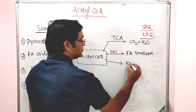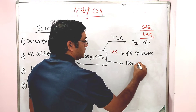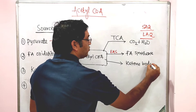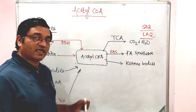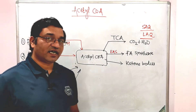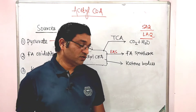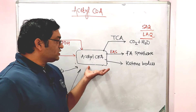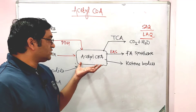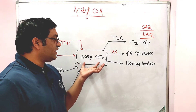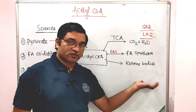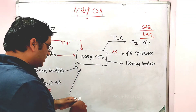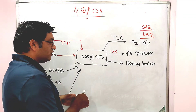Acetyl coenzyme A is also converted into ketone bodies through ketogenesis. The important ketone bodies produced are beta-hydroxybutyrate, acetoacetate, and acetone.